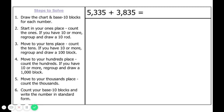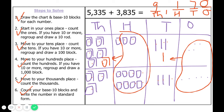I want you to solve this one on your own. Pause the video, show your work on your paper or dry erase board, and unpause when you're ready to check your answer. Five thousand three hundred thirty-five plus three thousand eight hundred thirty-five equals a sum of nine thousand one hundred seventy. Make sure that you did your regrouping correctly — we had to regroup in our ones place and our hundreds place this time. Remember, we regroup when we have a group of ten: ten ones equals a ten, ten tens equals one hundred, ten hundreds equals one thousand.